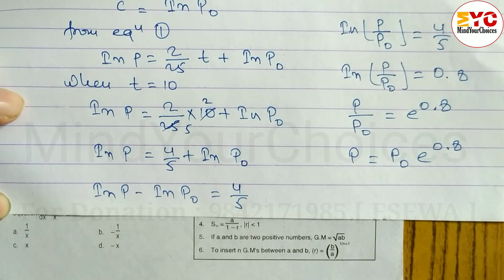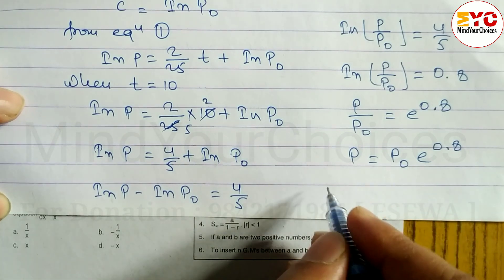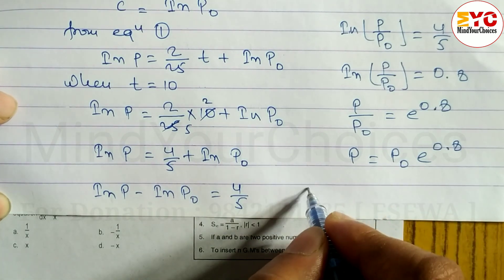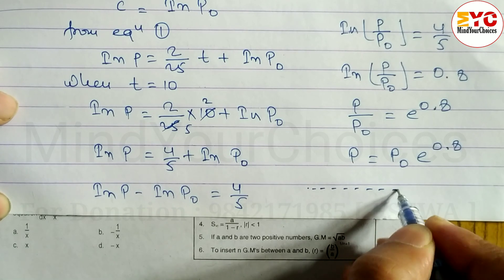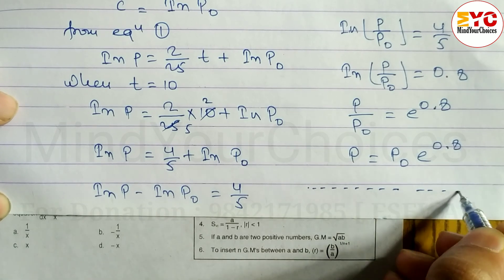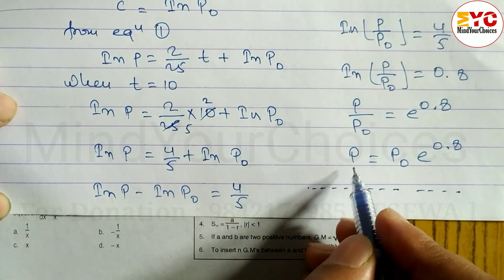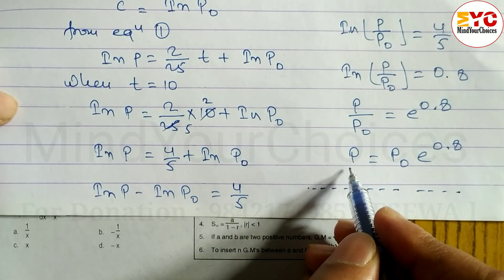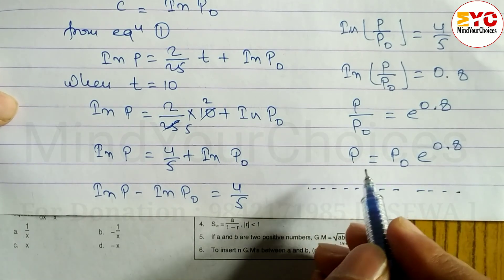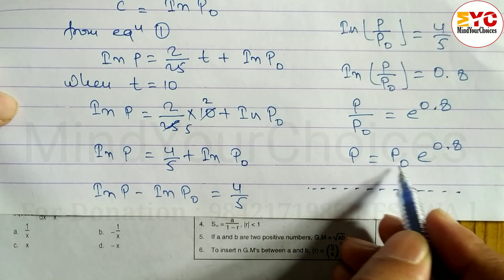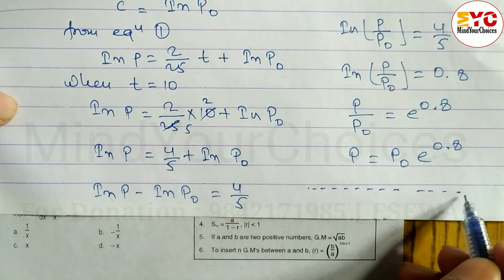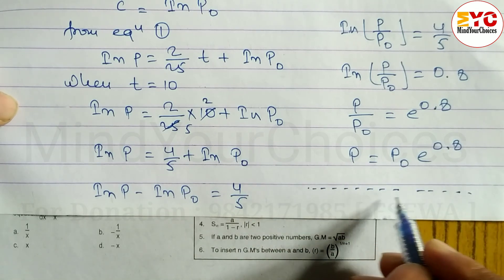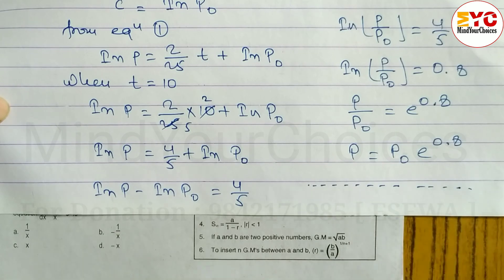Cross multiplying gives the required population after 10 years: p = p0·e^0.8, where p is the population after t years and p0 is the initial population.